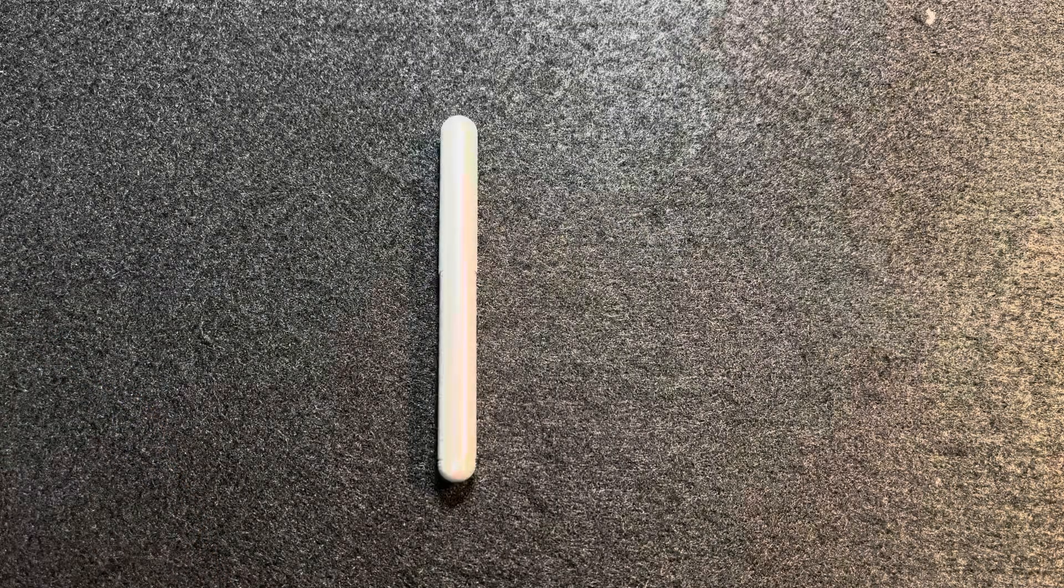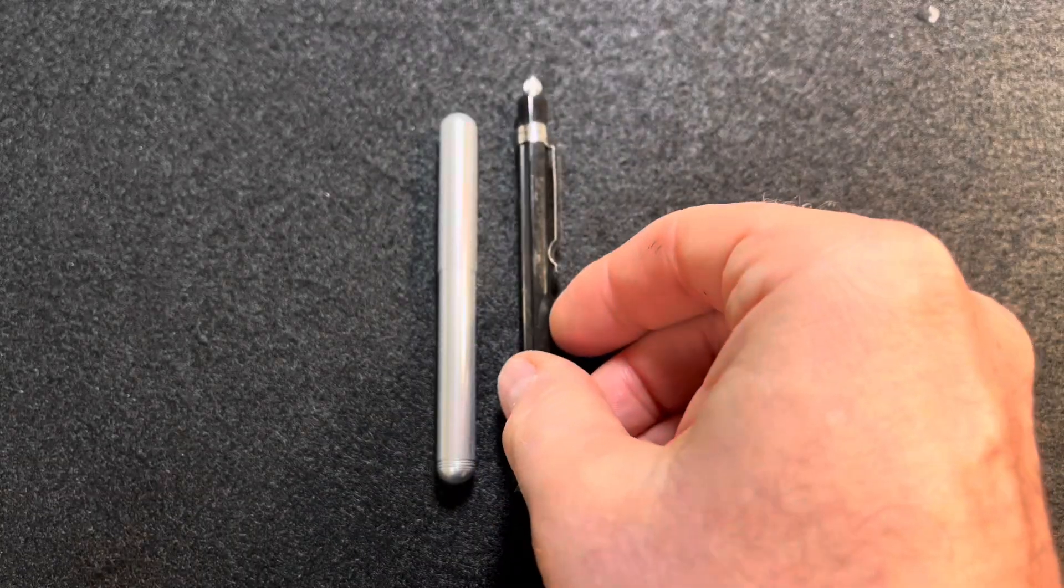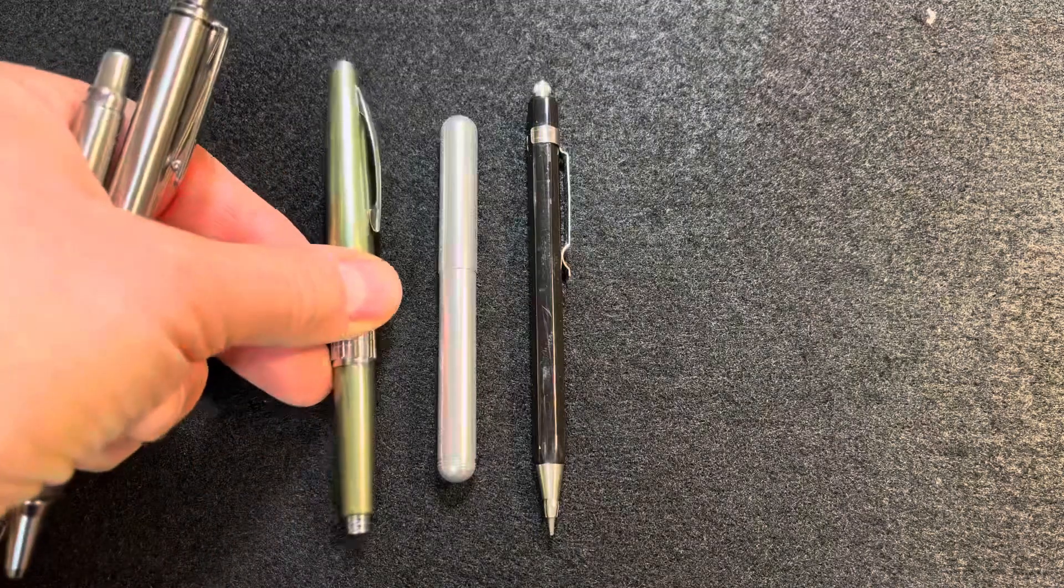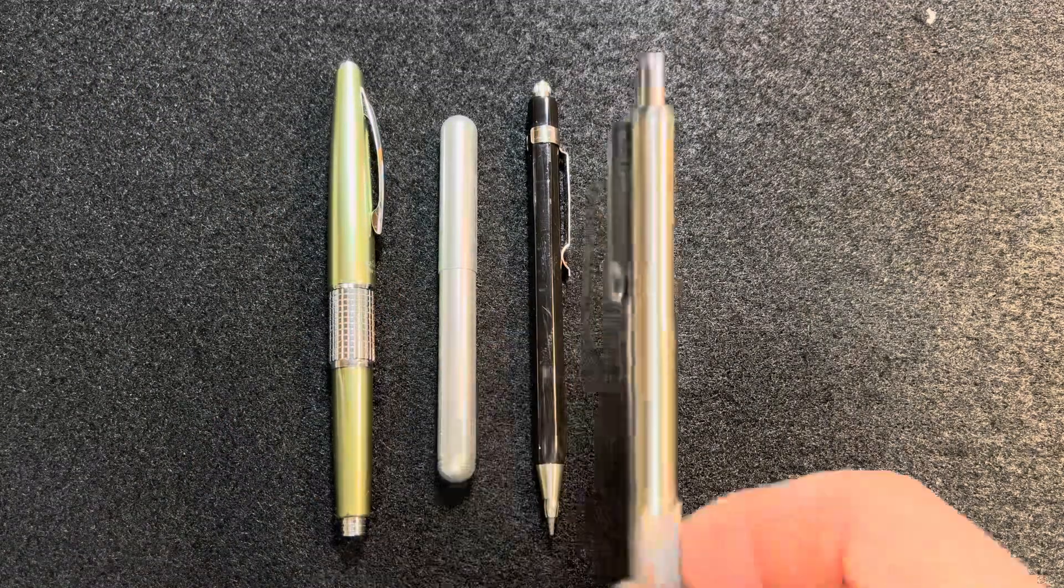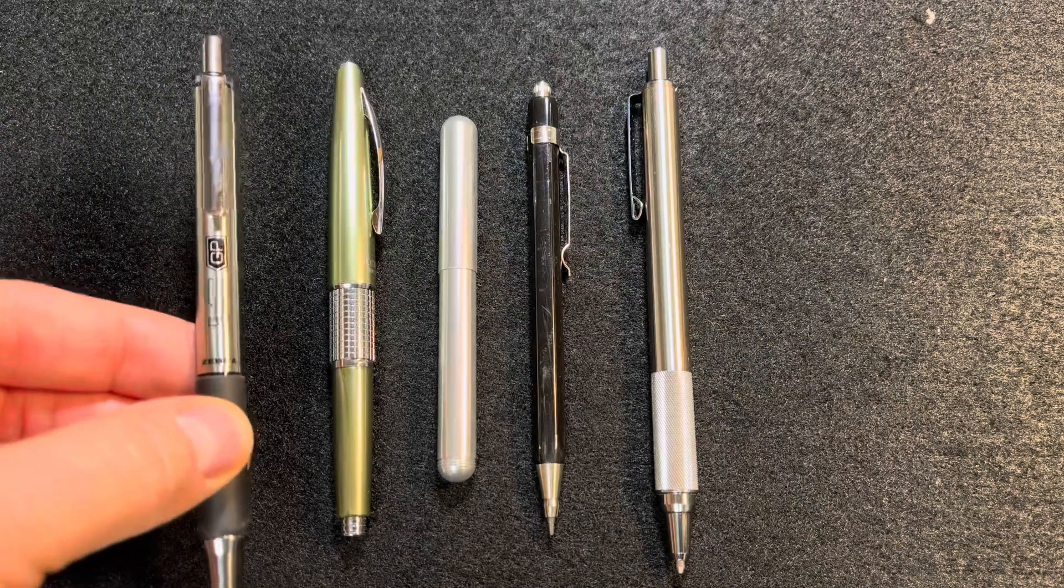Let's do a little size comparison. Here it is next to a Koh-i-Noor pencil. I really like that pencil. Here's a Pentel Kerry. Here is a Zebra 701, the Zebra 402.